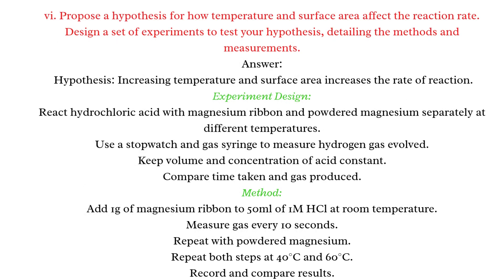Long Q6: Propose a hypothesis for how temperature and surface area affect the reaction rate, and design experiments to test it. Hypothesis: Increasing temperature and surface area increases the rate of reaction. Experiment: React hydrochloric acid with magnesium ribbon and powdered magnesium separately at different temperatures. Use a stopwatch and gas syringe to measure hydrogen gas evolved. Add 1g of magnesium ribbon to 50mL of 1M HCl at room temperature, measure gas every 10 seconds, repeat with powdered magnesium, and at 40°C and 60°C.